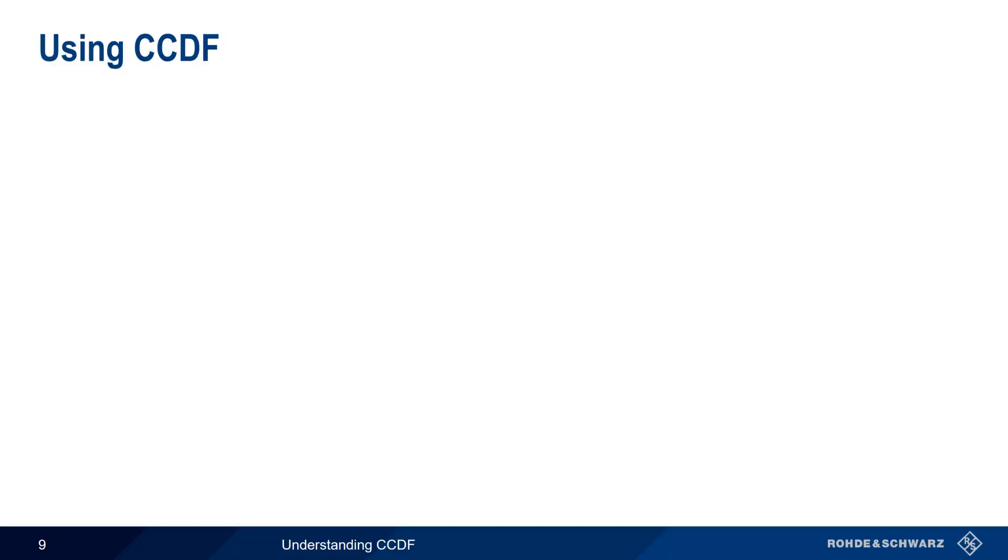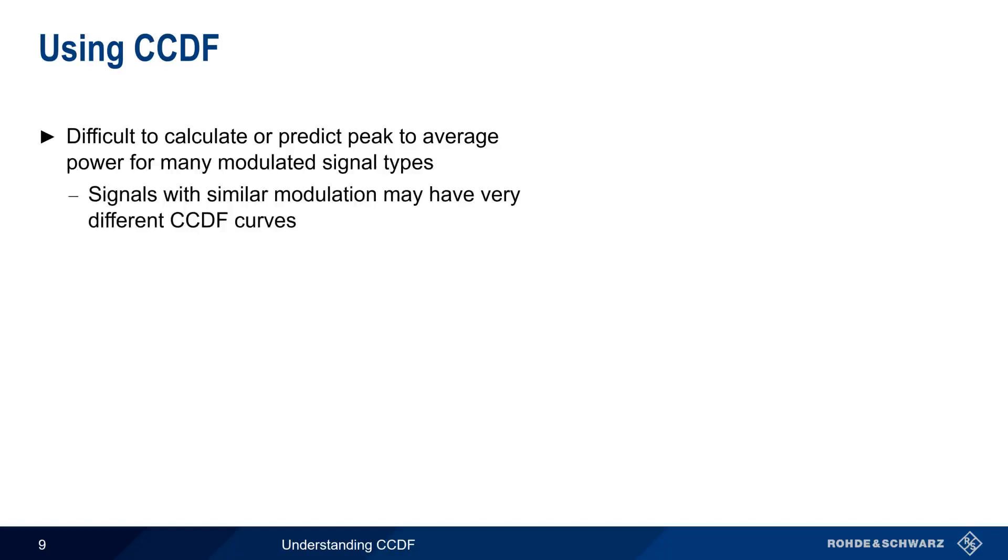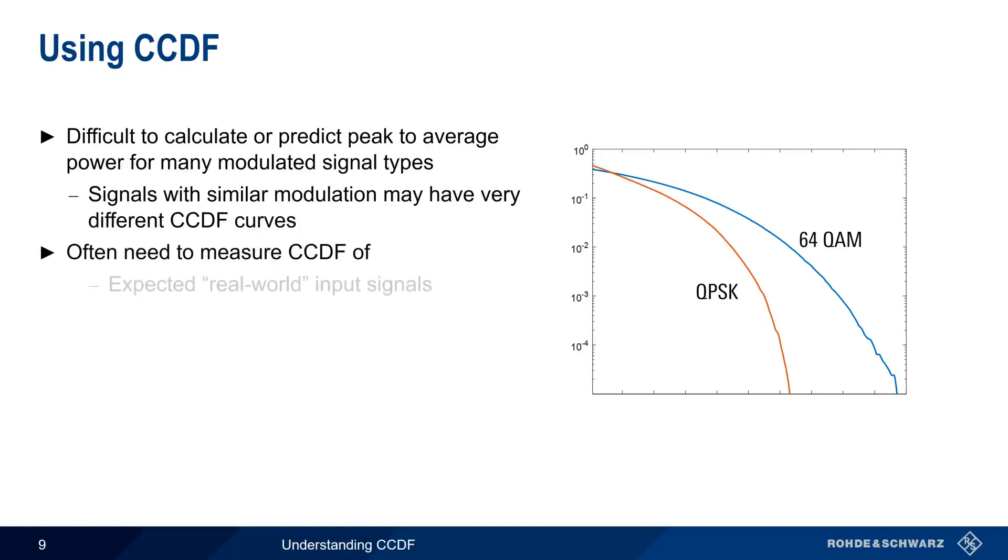CCDF can also be helpful to us in a number of other ways. First, it's difficult to mathematically calculate the peak to average power ratio of many modulated signals based solely on that signal's parameters. Even signals with similar modulation may have very different CCDF curves. For example, an LTE signal using 64-QAM modulation will have a different CCDF curve than an LTE signal using only QPSK. So for designing a device like a filter, amplifier, etc., we need to measure the CCDF of the expected real-world input signals as well as the CCDF of the signals used in design, test, and debug.